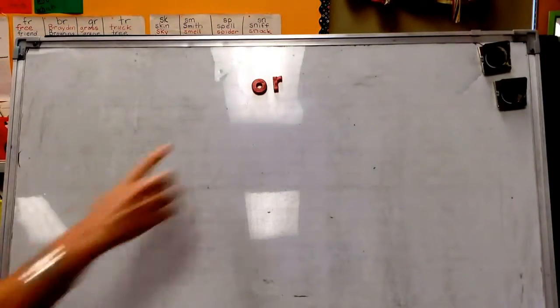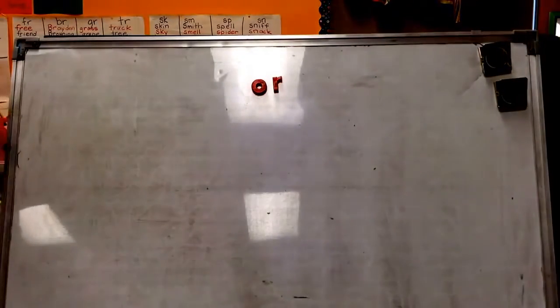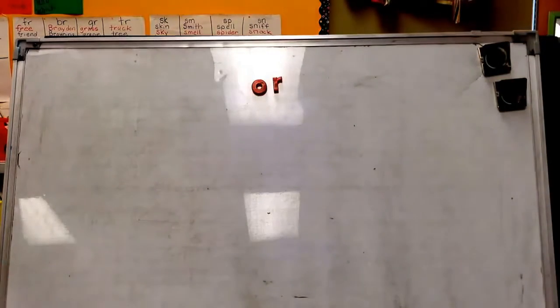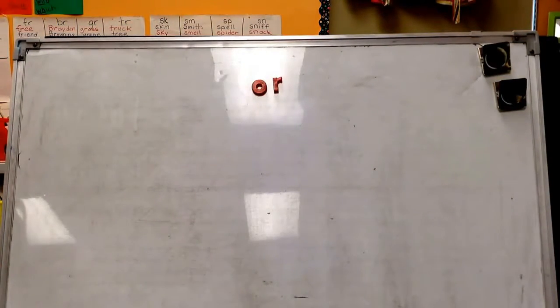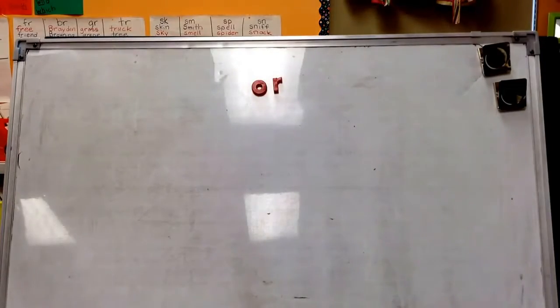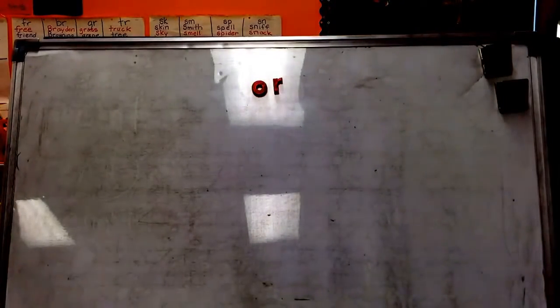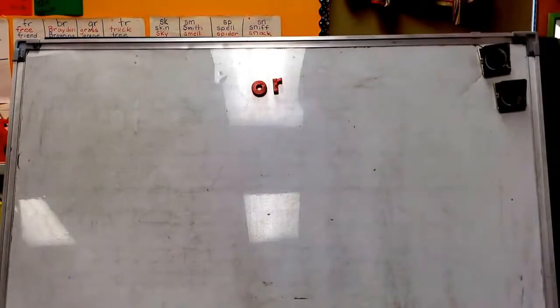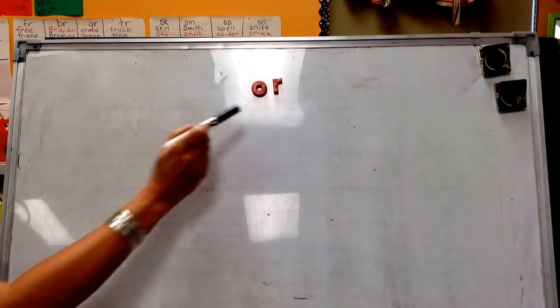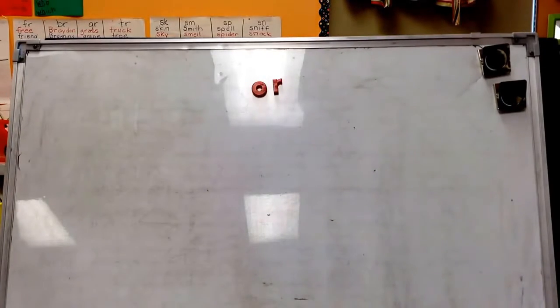We have been learning about when a vowel is followed by R, it changes the sound of the vowel. It's not the same short O or long O sound. And when we see OR, one of the sounds that it can make is OR. We've been practicing writing words and making words with OR, and today we're going to practice reading words. So when I come across a word that has OR in it, I'm going to say it slowly and read it as OR.